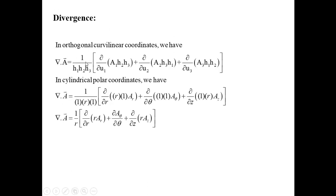For divergence, replacing the scale factors into the orthogonal curvilinear formula gives: ∇·A = (1/r)[∂(r A_r)/∂r + ∂(A_θ)/∂θ + ∂(r A_z)/∂z]. This is the divergence expression in cylindrical polar coordinates.